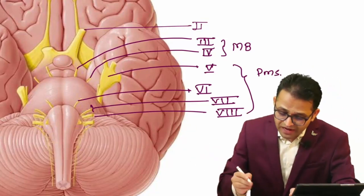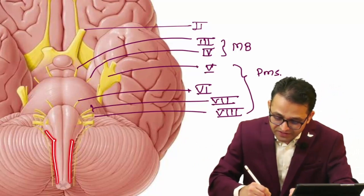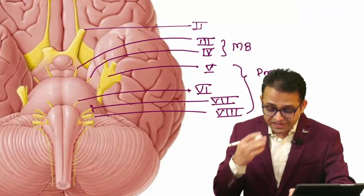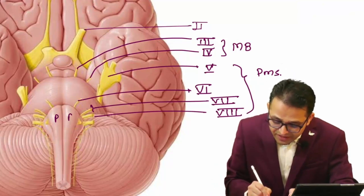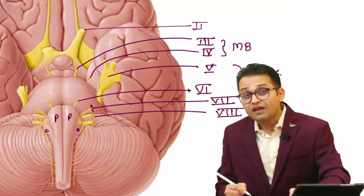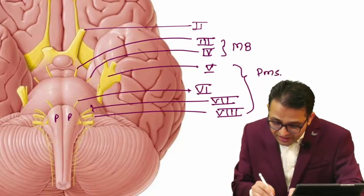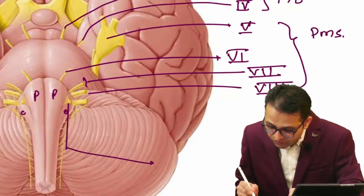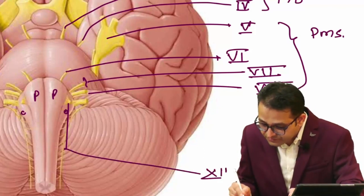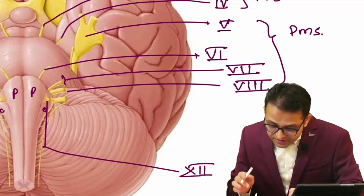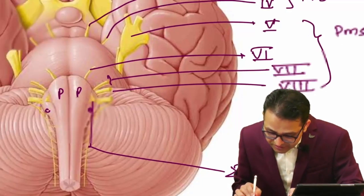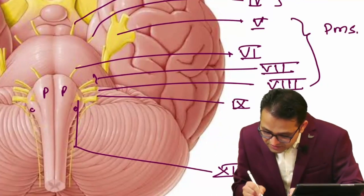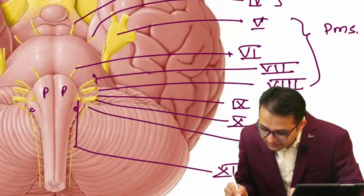Five, six, seven, eight have their nuclei in the pons. The medulla - the bulb-like dilated structure - contains 12th cranial nerve between the pyramid and olive. Just behind the olive are the ninth, tenth, and eleventh cranial nerves. The central elevation is the pyramid and the lateral elevation is the olive. Damage to the medulla is known as bulbar paralysis.